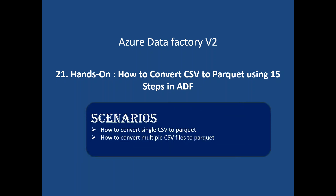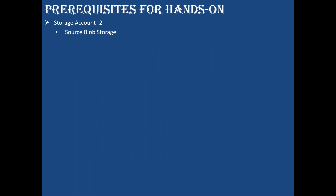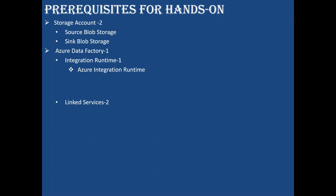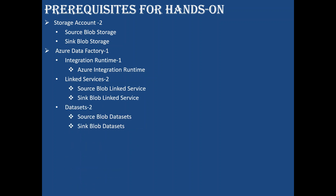There are two scenarios involved. First, if you have a folder with a combination of different file formats, we will see how to choose a single CSV file and convert it to Parquet. Second scenario: you have an entire folder with multiple CSV files — how we can convert all those CSV files into the corresponding Parquet files. To do this lab, the prerequisites are: a storage account for source and sink, one Azure Data Factory with integration runtime, two linked services — one for source and one for sink — two datasets for reading source data and writing to sink, and one copy activity inside a pipeline to orchestrate the copy.